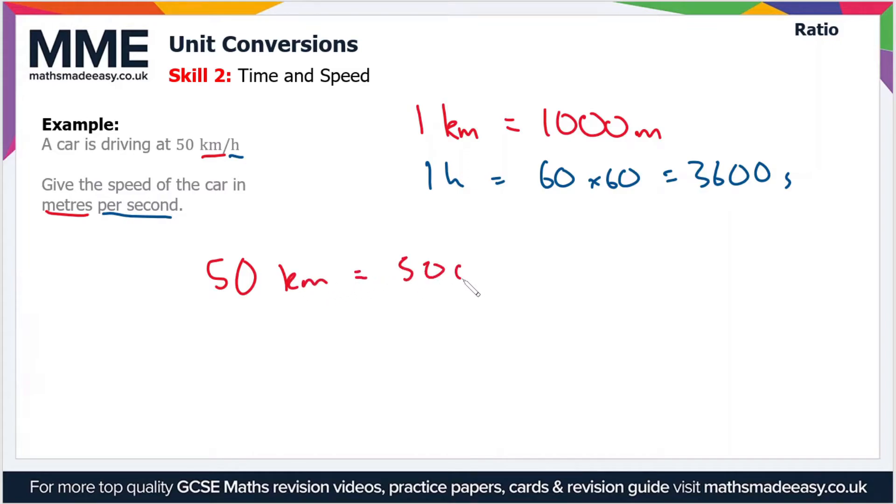...equals 50,000 meters. And then this hour, so one hour as we've already seen is 3600 seconds. So to convert the speed of the car from kilometers per hour to meters per second, all we'll do is divide 50,000 by the 3600.